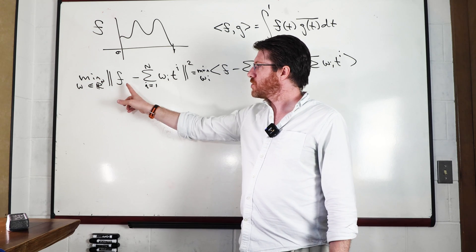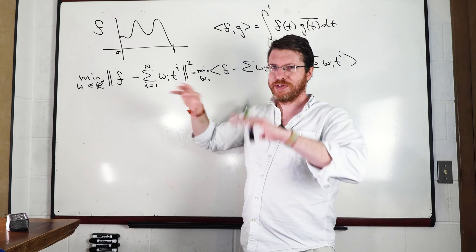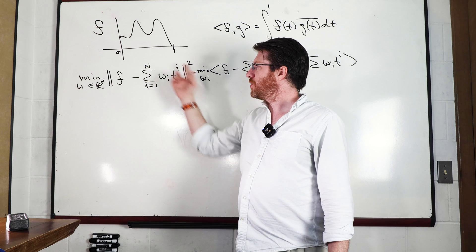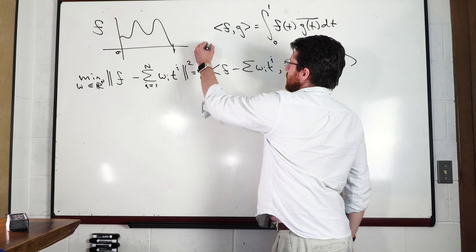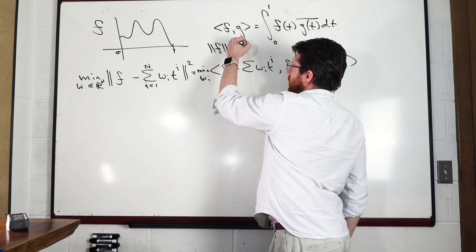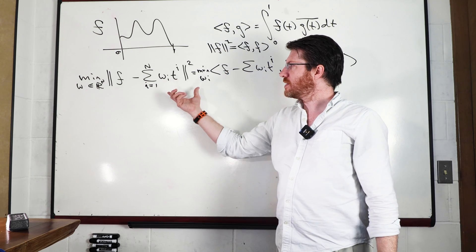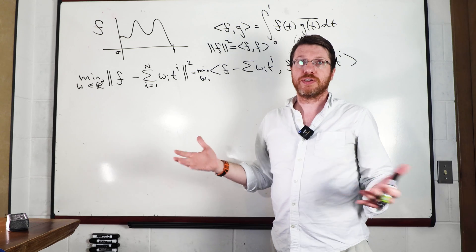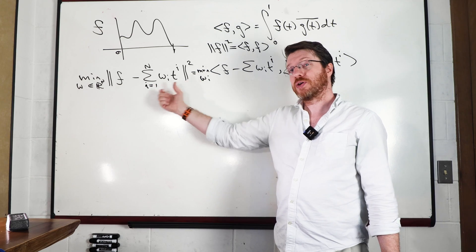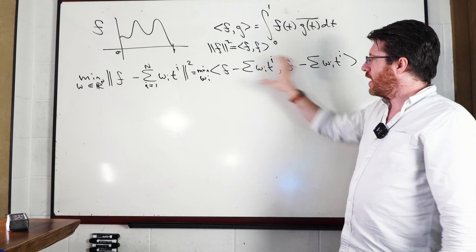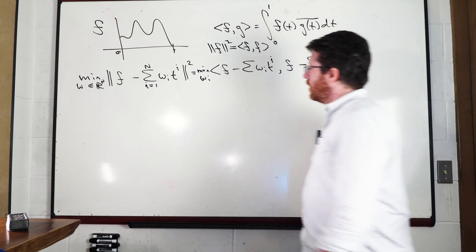We take the difference between f and this polynomial and want to minimize the L2 norm. We expand the norm in terms of the inner product, and then expand further using linearity on both sides, giving us a new equation. Essentially we expand everything out into a matrix form to make it easier to read.